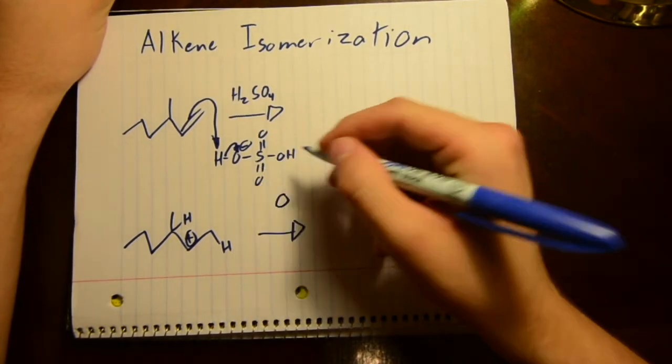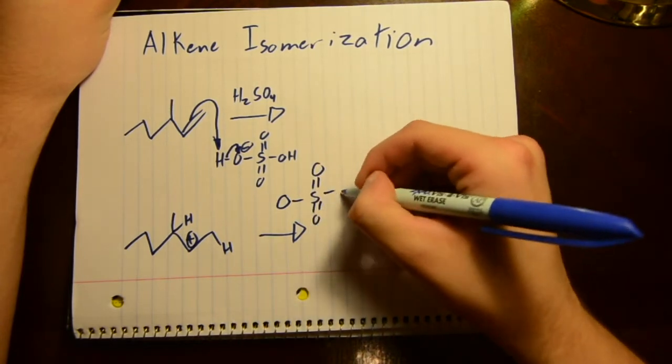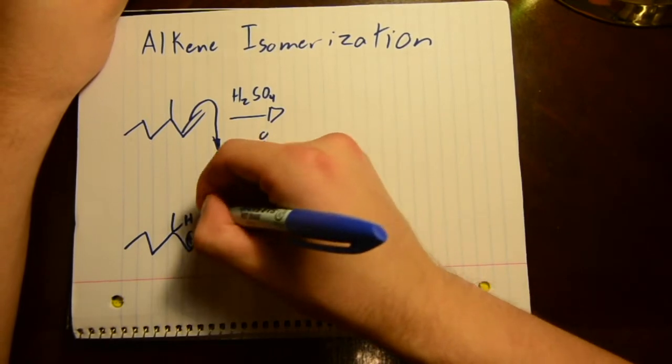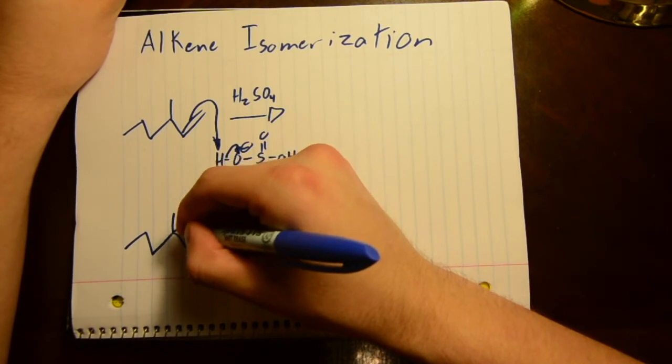The conjugate base takes a hydrogen from this molecule, and then this bond will become a double bond.